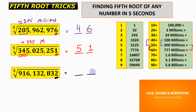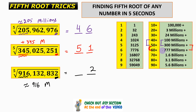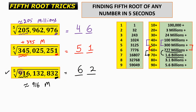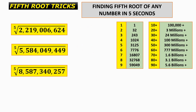Next: the unit place is 2, so the unit place of the answer is 2. This number is approximately 916 million, which lies between 777 million and 1.6 billion, so the answer lies between 60 and 70. Therefore the tens digit is 6, and the fifth root is 62.